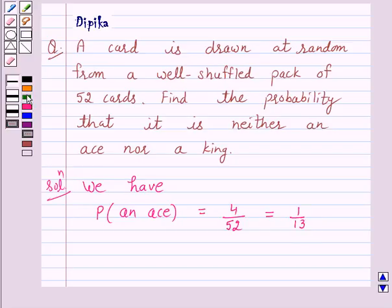Again, in a pack of 52 cards, there are 4 kings. So probability of a king is equal to 4 over 52, which is again equal to 1 over 13.